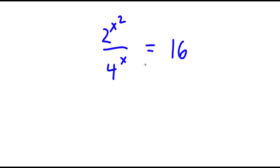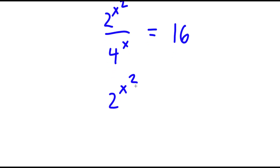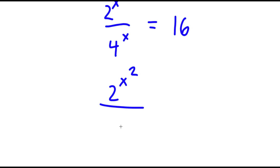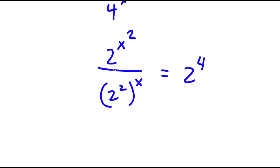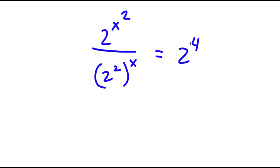In this problem I have 2 to the power of x squared over 4 to the power of x is equal to 16. I'm going to rewrite this as 2 to the power of x squared over 2 squared to the power of x is equal to 2 to the power of 4, so that all my terms have a base of 2.